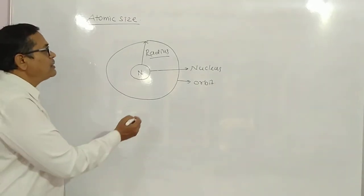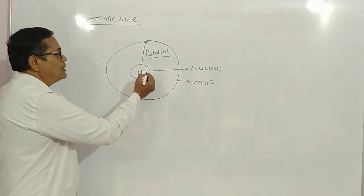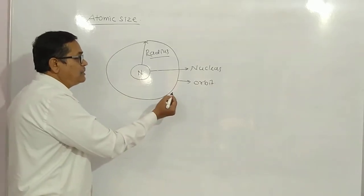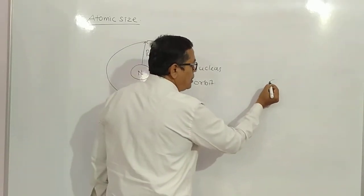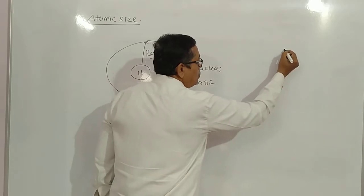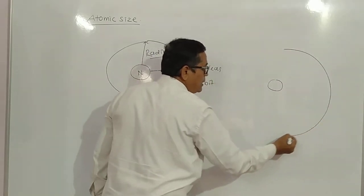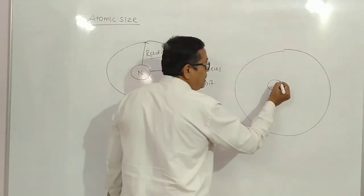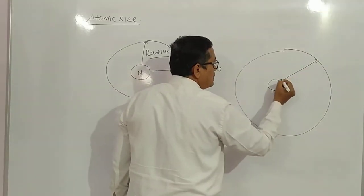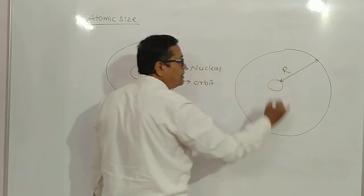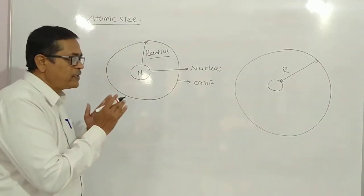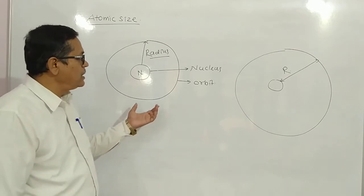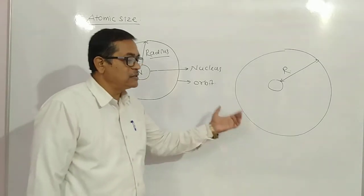In this way, the number of orbits increases as we go down the periodic table. With more orbits, the distance between the nucleus and the outermost orbit increases, meaning the radius of the atom increases and hence the size of the atom increases.